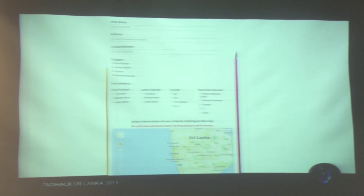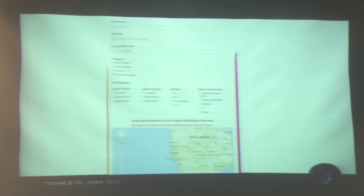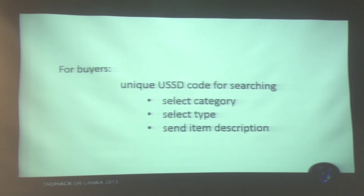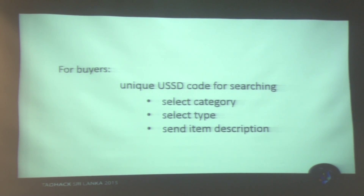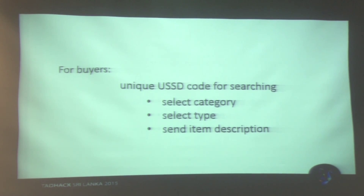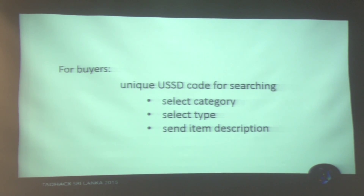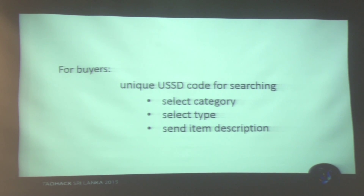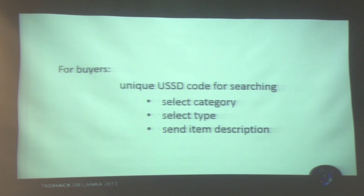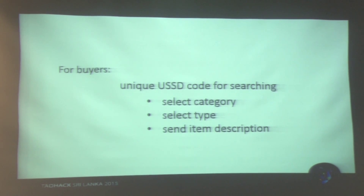The shops will have to subscribe to our service with a unique mobile number. On the other end, the customer will be able to access our system with a simple USSD code. This will allow them to select their required item category and item type. Finally, they will be able to send a brief description of their item.